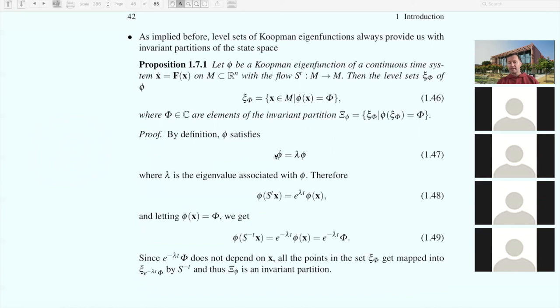The level sets themselves split the space into sets on which phi, the eigenfunction, acquires different values. That's an invariant partition associated with phi. How do we prove this? By definition of the eigenfunction phi: phi dot equals lambda phi is what an eigenfunction satisfies. Lambda is an eigenvalue.